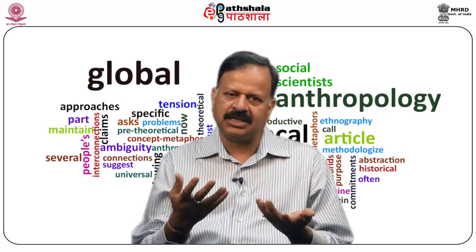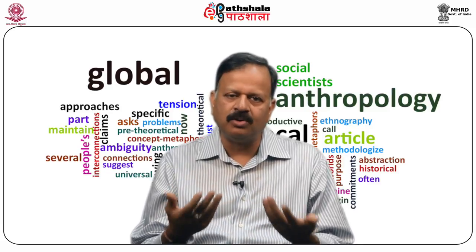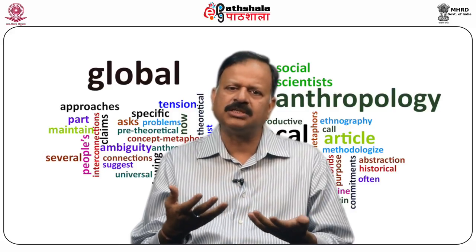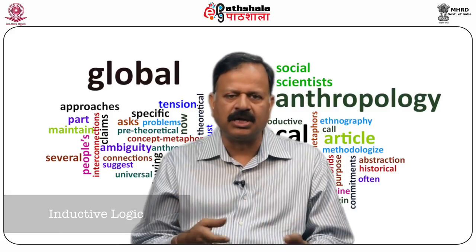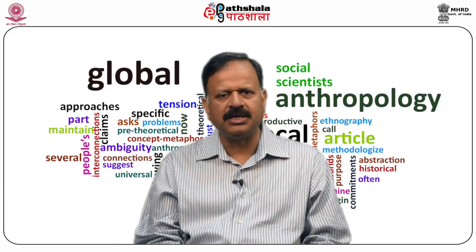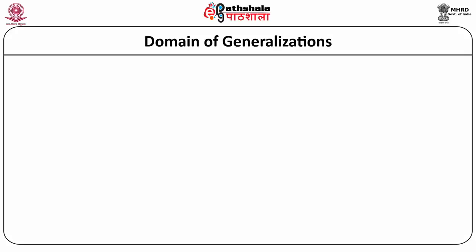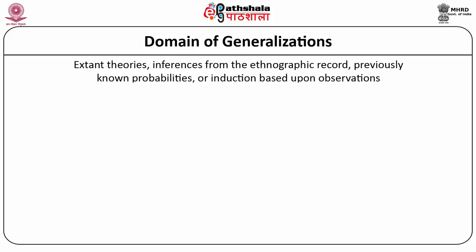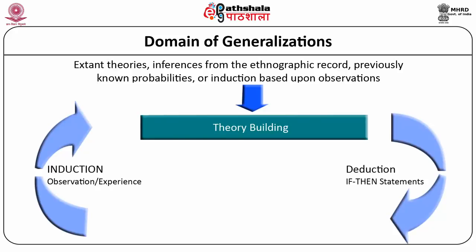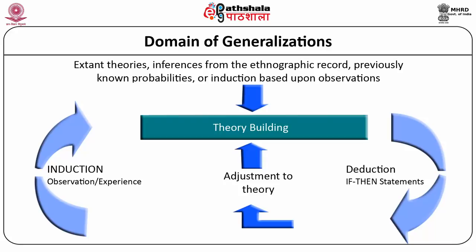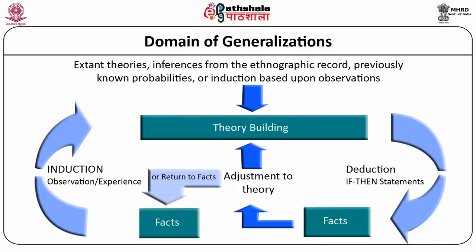After having said that there are different forms of logic and different ways of going about generalization, it is important to know how these kinds of logics came up in the discipline of anthropology. Anthropological generalizations could be based on existing theories, inferences from ethnographic records, or previously known possibilities. It could be induction based upon observations, and it generally leads to theory building — a continuous process of adjustment to existing theory based on fresh empirical findings.